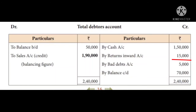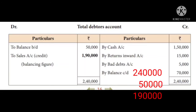Continuing the credit side: returns inward: 15,000; bad debts: 5,000; balance carried down (closing debtors balance): 70,000. So the credit side total is 2,40,000. The debit side total is 50,000, so the difference of 2,40,000 and 50,000 gives us credit sales of 1,90,000.